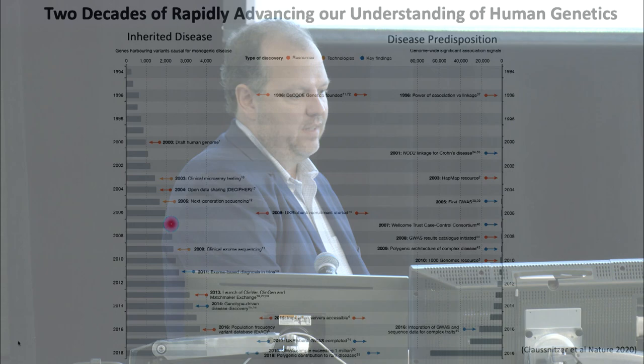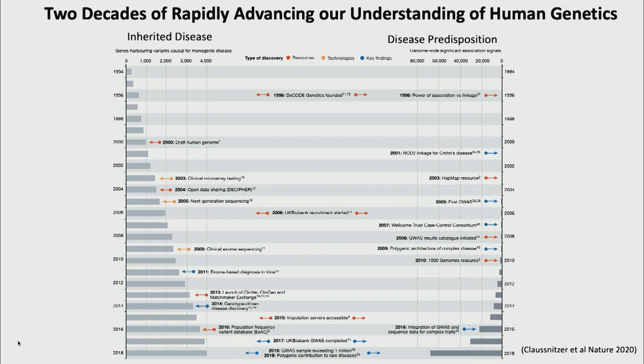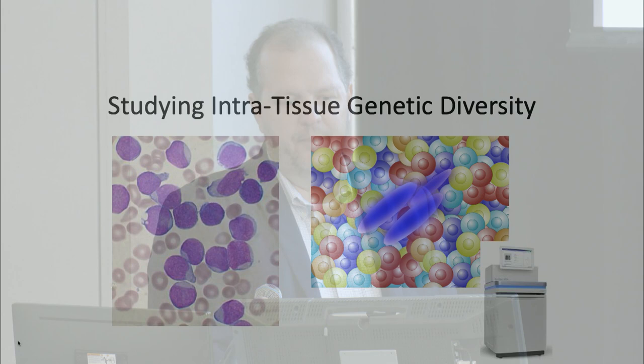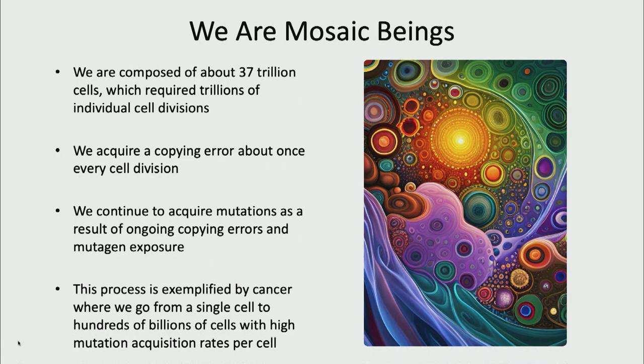If you look at inherited diseases, you can see the massive increase in single-gene-associated diseases that we've identified, which was really driven by the development of next-generation sequencing technologies. Similarly, you can see disease predispositions — GWAS studies finding mutations that predispose to disease have also rapidly expanded. The question I've had is really what are the next frontiers? Some people argue we're learning most of what we can by just sequencing large populations, but I would argue there is still a lot to learn about studying intratissue genetic diversity.